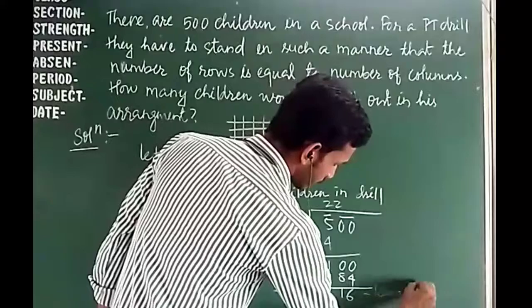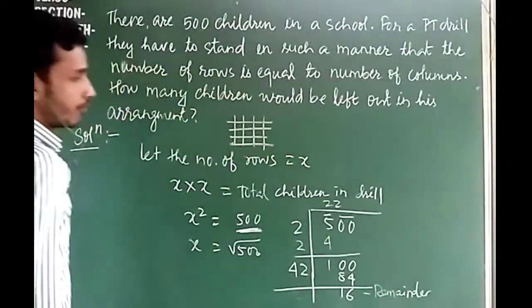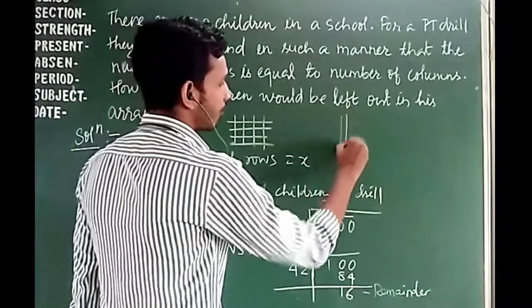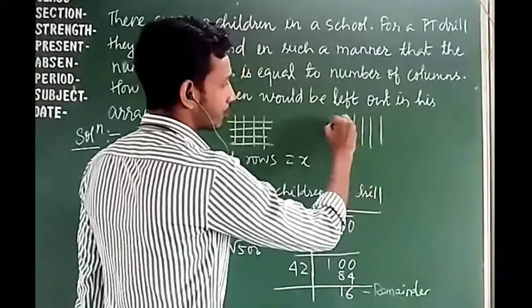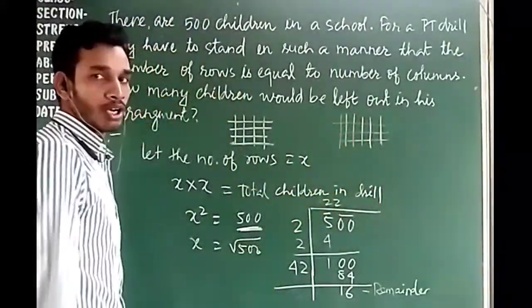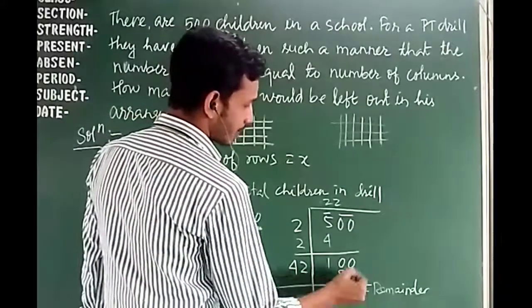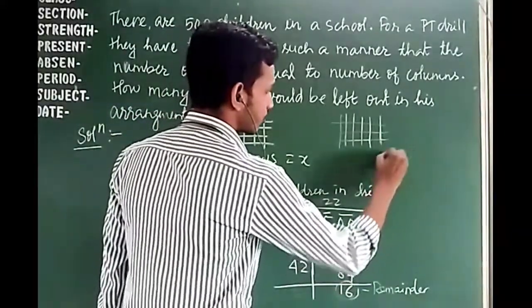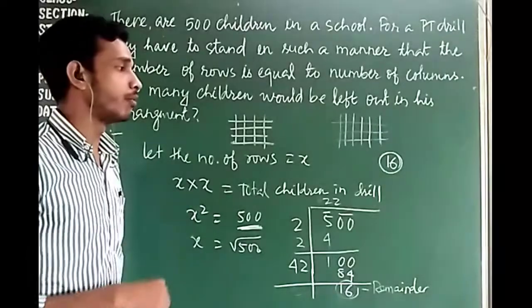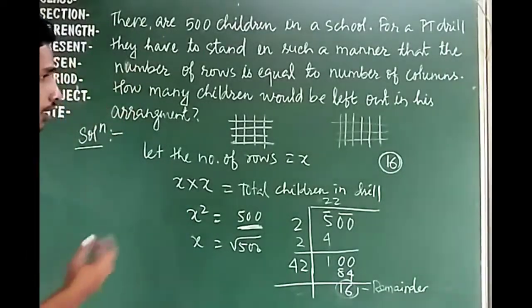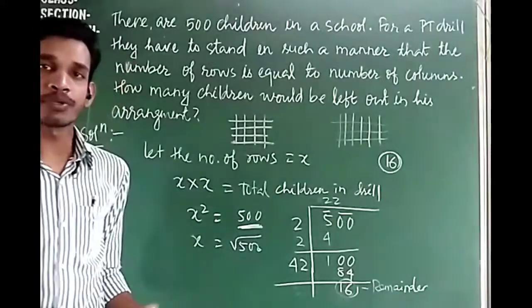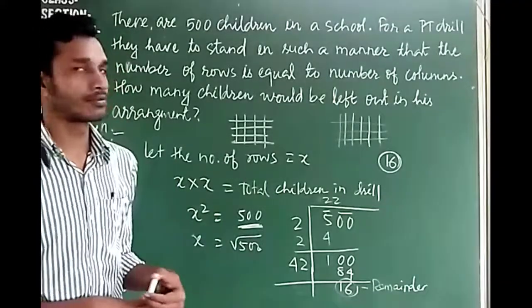According to this, 22 rows and 22 columns can be arranged, and 60 students will be left out of the group. I hope this is clear to you all. Thank you.